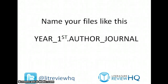The trick is so simple — it's to do with the way that you name your folders and your downloads. I just name them like this: year, underscore, first author, underscore, and then the journal. That's it. That will organize all of your references and make them searchable by year, by the first author, and by the journal — which are basically the three most important things to find any journal article.